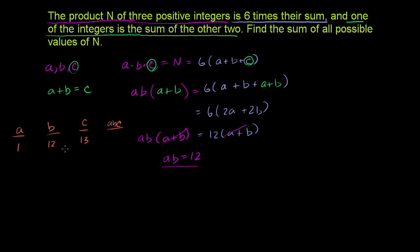1 times 12 times 13. 12 times 12 is 144, plus another 12 is going to be 156. And just for fun, you can verify that this is going to be equal to 6 times their sum. Their sum is 26. 26 times 6 is 156. So this one definitely worked, and it should, because we boiled down those constraints to a times b need to be equal to 12.